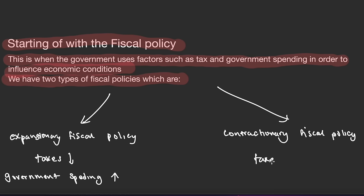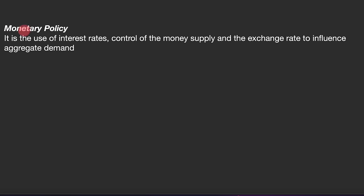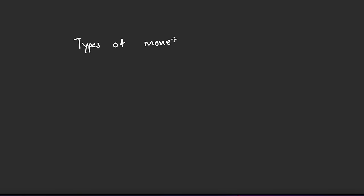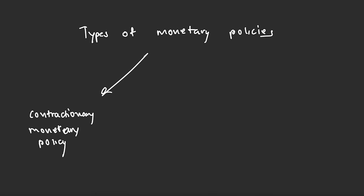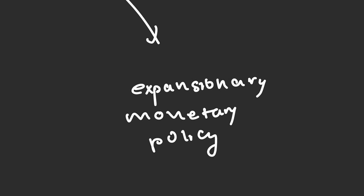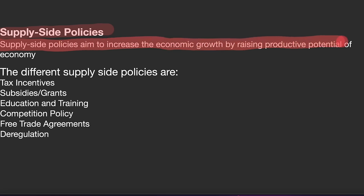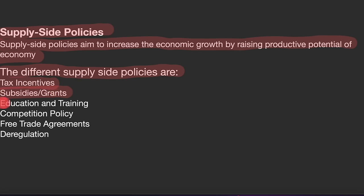There are two types of fiscal policy. Expansionary fiscal policy reduces taxes and increases government spending. Contractionary fiscal policy increases taxes and reduces government spending. Types of taxes include progressive tax, regressive tax, proportional tax, direct tax, and indirect tax. Monetary policy is the use of interest rates to control the money supply and exchange rate to influence aggregate demand. Contractionary monetary policy reduces price inflation by increasing interest rates. Expansionary monetary policy is used during a recession to increase employment by cutting interest rates. Supply-side policies aim to increase economic growth by raising the productive potential of the economy, through tax incentives, subsidies, grants, education and training, competition policy, free trade agreements, and deregulation.